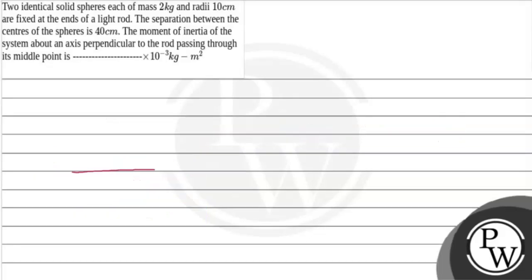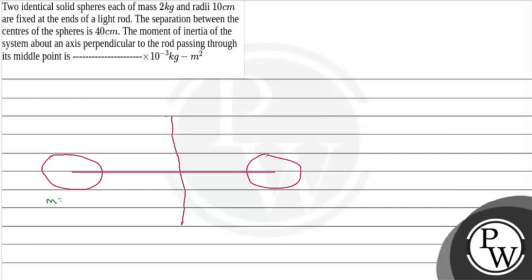We have a light rod with identical solid spheres at each end. Each sphere has mass m = 2 kg and radius r = 10 cm. The length of the rod (separation between sphere centers) is 40 cm, so the distance from the middle point to each sphere's center is 20 cm.